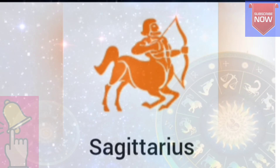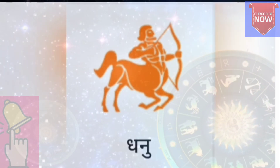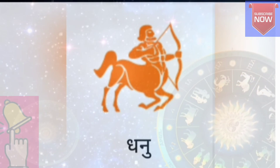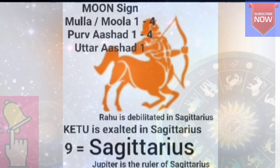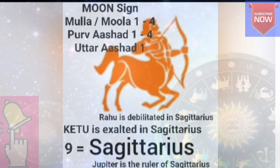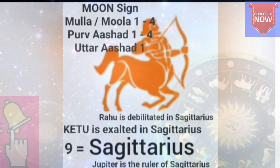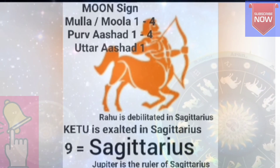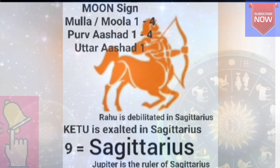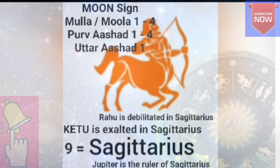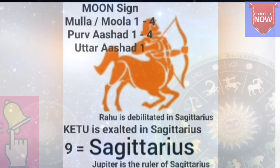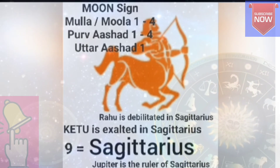Sagittarius, number 9, is called Dhanu in Hindi. This Rashi is ruled by Jupiter. Ketu is exalted in Sagittarius and Rahu is debilitated in Sagittarius. The nakshatras are: Moola 1, 2, 3, and 4 Pada, Purvashadha 1, 2, 3, and 4 Padas, and Uttarashadha 1 Pada.